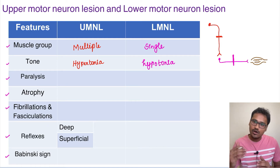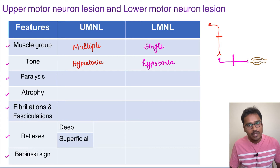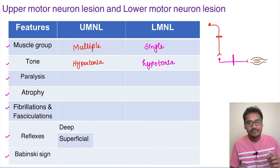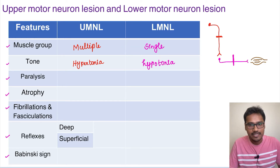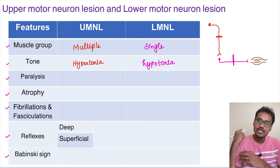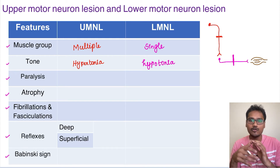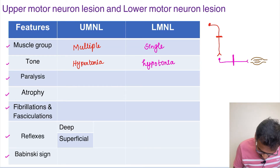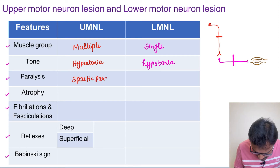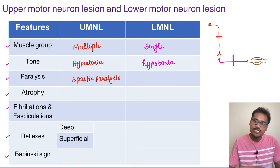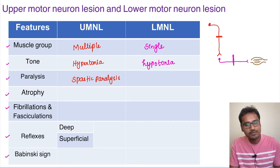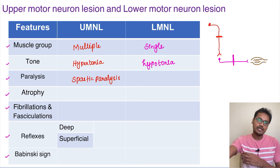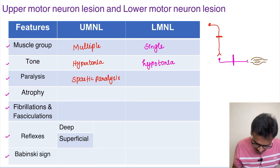Whether there is upper motor neuron lesion or lower motor neuron lesion, the muscle will ultimately go into paralysis, but a different kind. In upper motor neuron lesion, the lower motor neuron will keep contracting and cause a stiff kind of paralysis, called spastic paralysis. Whereas in case of lower motor neuron lesion, it will cause flaccid paralysis — flaccid means loose — because the muscle is not being innervated and will become very loose in nature.